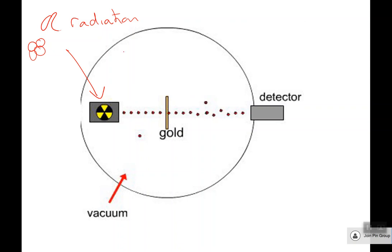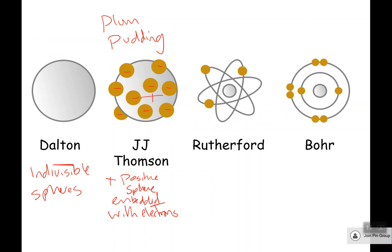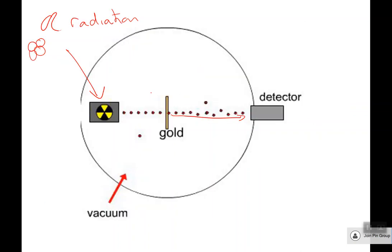Because what Rutherford thought would happen was that this radiation would go into the gold and most of it, even all of it, would just go straight through over here. He thought that this positive blob might deflect it a little bit, but it was quite soft. It should just go straight through. It might be deflected a little bit. And when they started doing this experiment, they realized, yep, it's all working fine. Most of them are going straight through. Some of them being deflected at small angles. We're good.